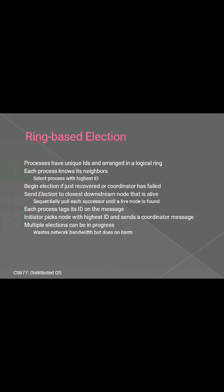The next one is the ring-based election algorithm, which is based on the use of a ring. Unlike some ring algorithms, this one does not use a token. We assume that the processes are physically or logically ordered so that each process knows whose successor it is. When any process notices that the coordinator is not functioning, it builds an election message containing its own process number and sends it to its successor. If the successor is down, the sender skips over it and goes to the next member along the ring until a running process is located. At each step, the sender adds its own process number to the list in the message, effectively making itself a candidate for coordinator.